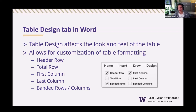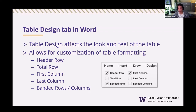Table design affects the look and feel of the table in Word and allows for customization of table formatting. To access the table design tab, you'll need to highlight the table first, which adds two new tabs to the home ribbon: table design and layout. On the table design tab, by default, the checkboxes for header row, first column, and banded rows are automatically checked. Usually leaving these checkboxes alone and using the default settings when creating a table in Word is fine for accessibility.